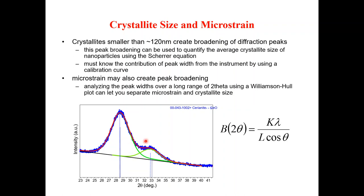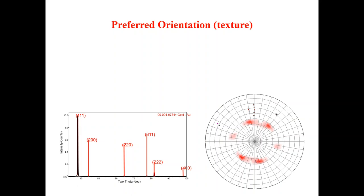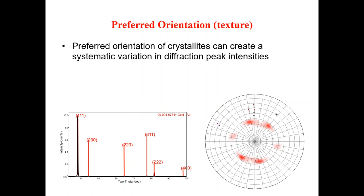For the Scherrer equation, you need the full width at half maximum (FWHM) in radians and the value of theta. First, calculate the value in radians for 2-theta, then divide by two to get theta. The FWHM is calculated from the peak. The K value is the shape factor with a value in a particular range, and lambda is the wavelength of the X-ray radiation used. These factors are known, so after calculating FWHM and theta and inserting them into the equation, you obtain the crystallite size of your material.